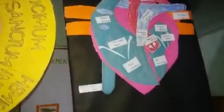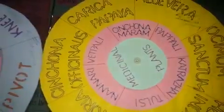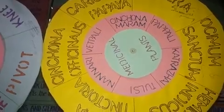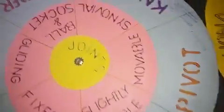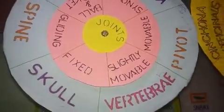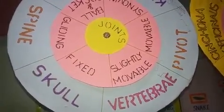Next one is a heart model — a dummy model showing the heart along with its parts. This is a rotating disc of medicinal plants with scientific and common names. We also have bones: skulls, spine, joints, and vertebrae.